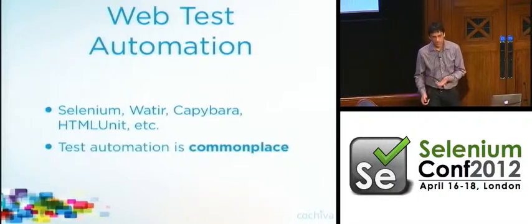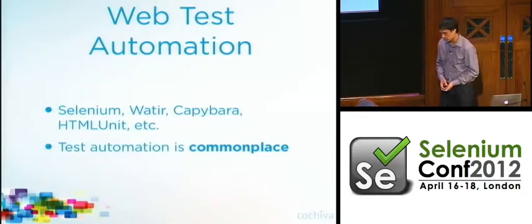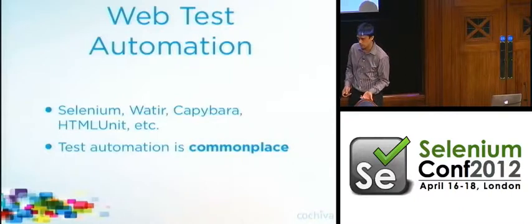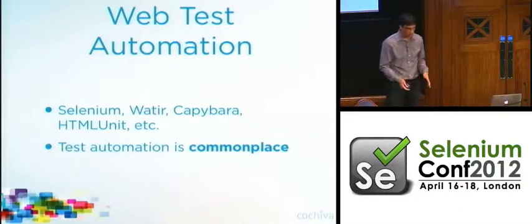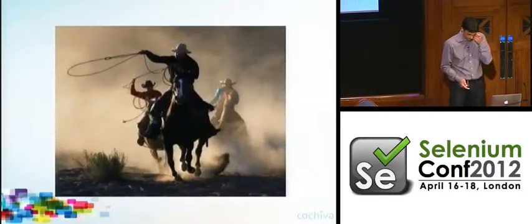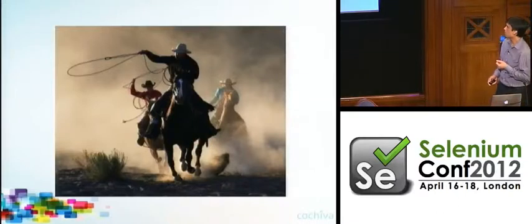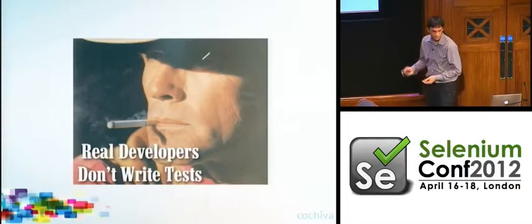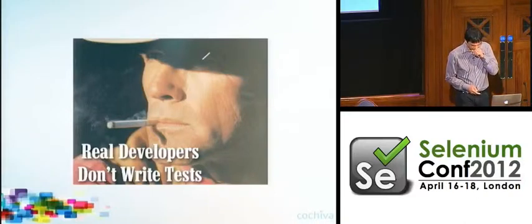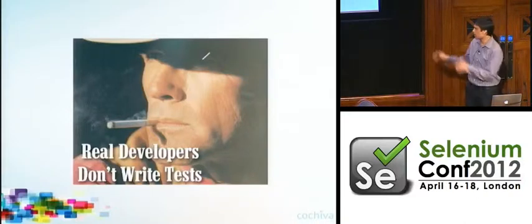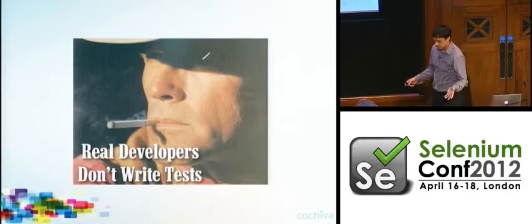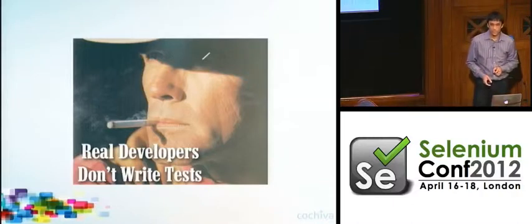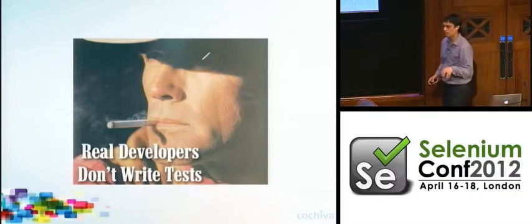Test automation is commonplace in web development culture, and that's not the case in iOS development culture at this point. There's a word some people might use to describe this situation — some people, not me — and I'm totally kidding. When people use the word 'cowboy' they mean reckless, and I don't think iOS developers are any more reckless than any other group of developers. But test automation maturity is a lagging indicator of overall platform maturity, so in that sense the iOS development world feels a bit behind.